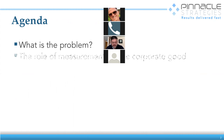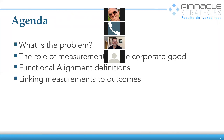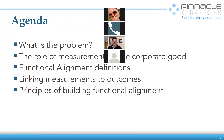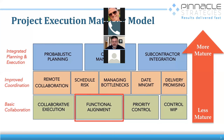The agenda for this next hour: we'll talk about what's the problem, what are we trying to solve, how can we use measurements for the common good. We'll talk about what is functional alignment, how do we link measurements to outcomes, the principles of building functional alignment, and I'm going to give you some detailed examples. We'll also talk about some dos and don'ts.